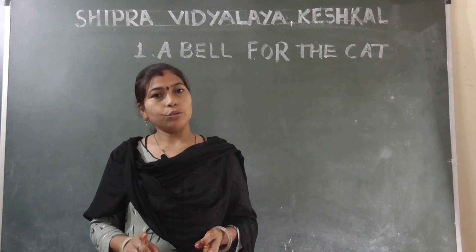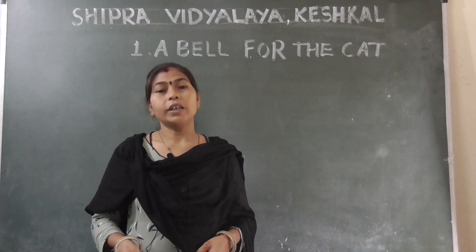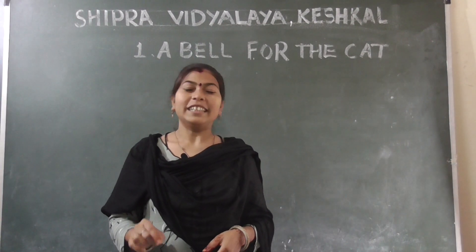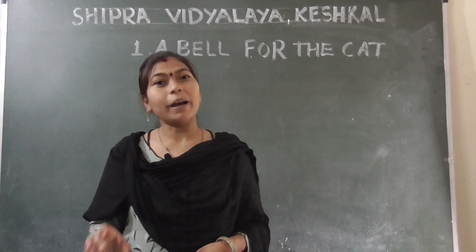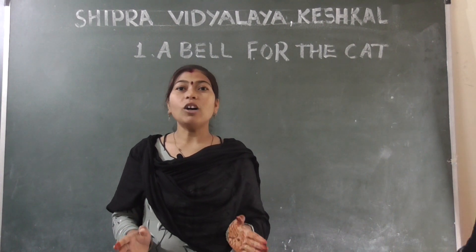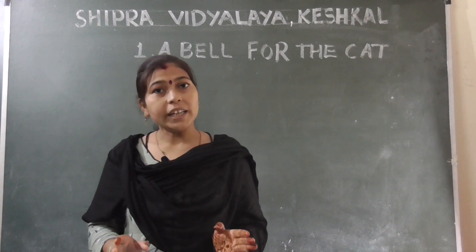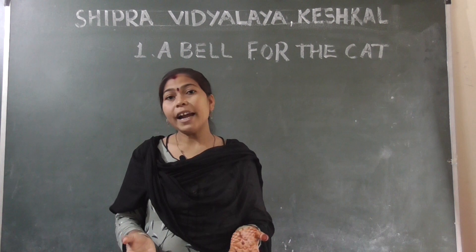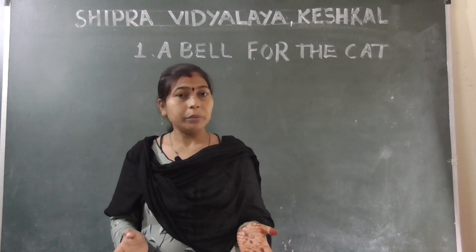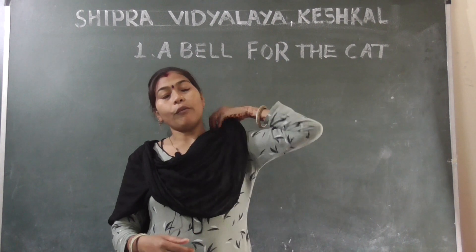In fables, animals are shown talking like humans. You must have heard the story of the tortoise and the rabbit — aapne khargoosh aur kachwe ki kahani suni hogi. This story is also a fable and is about a cat and mice. The mice were in a problem because the cat was killing many of them daily. The mice felt helpless. They were not only sad but also in great fear. One day, one of the older mice decided to find a solution to the problem.